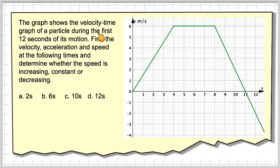The graph shows the velocity time graph of a particle during the first 12 seconds of its motion. Find the velocity, acceleration and speed at the following times and determine whether the speed is increasing, constant or decreasing.